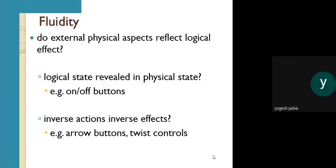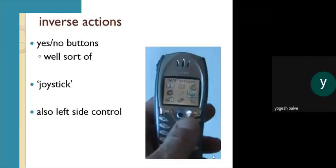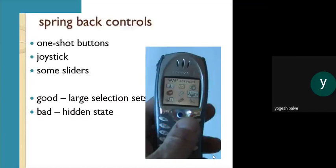Fluidity: do external physical aspects reflect the logical effect? Logical state is revealed in physical state. Example: on/off button. Inverse action — inverse effect. Examples include a narrow button and twist control. Inverse action examples are a yes/no button and a joystick. Whenever using a game, the joystick performs inverse actions. Spring back control: one short button, joystick, and some sliders. Good: last selection set. Bad: hidden state.